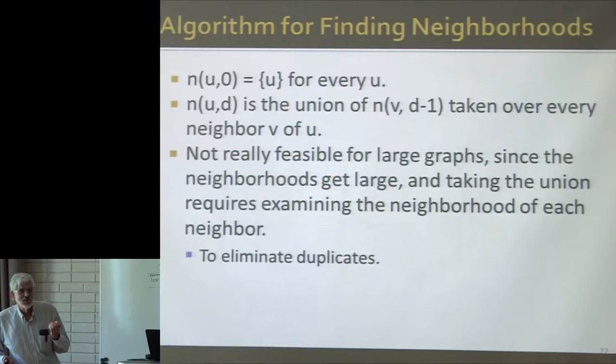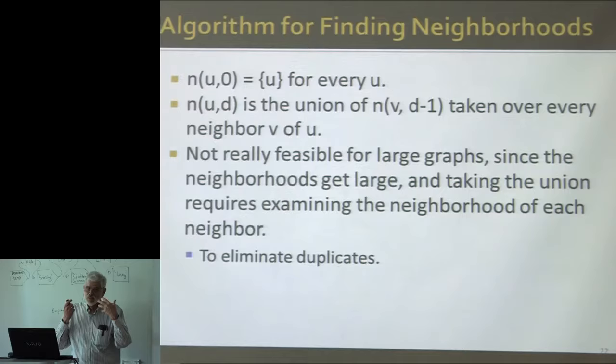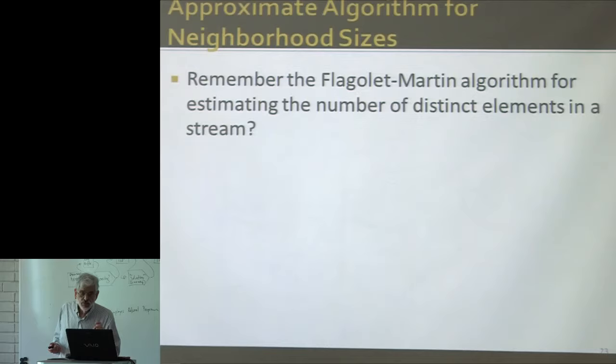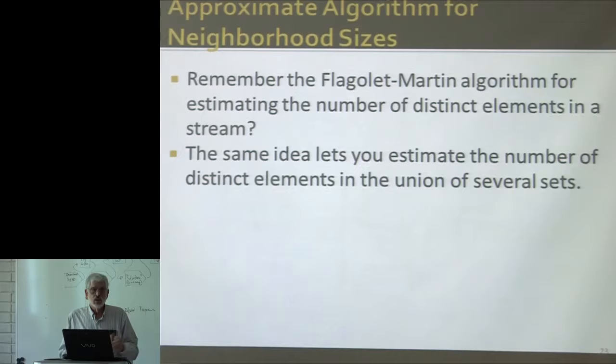If all we want to do is count them — count these neighborhoods — there's got to be a better way to do it. If you want an exact count, no — you have to maintain those sets exactly and compute the unions exactly. But if all you want is a count, you can actually use the Flajolet-Martin algorithm in a different way. It has nothing to do with streams — to estimate the sizes of the neighborhoods at various distances.